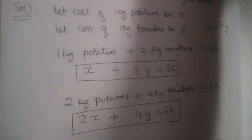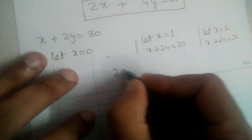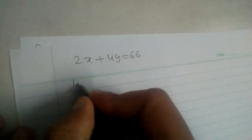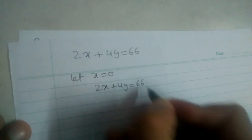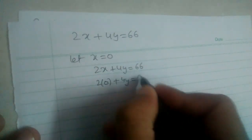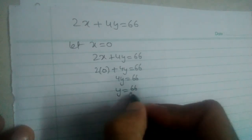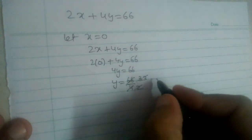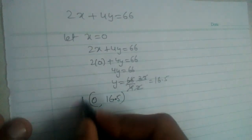Now let us find the solutions for the second equation, 2x plus 4y is equal to 66. Let x equal 0. The equation becomes 2 into 0 plus 4y equals 66, so 4y equals 66, and y equals 66 divided by 4, which is 16.5. The first solution is (0, 16.5).